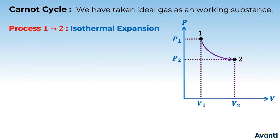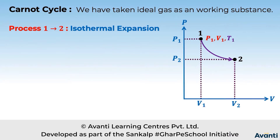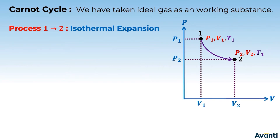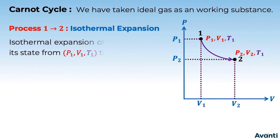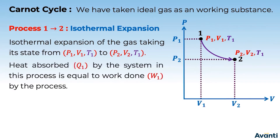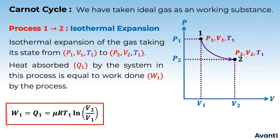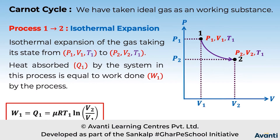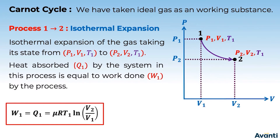The process from state 1 to state 2 is an isothermal expansion — the first step in the Carnot cycle. This means the pressure changes from P1 to P2 and volume changes to V2, but temperature remains the same because it is an isothermal process. In this process, heat absorbed by the system equals work done, since internal energy change is zero. The work done Q1 equals μRT1 ln(V2/V1).